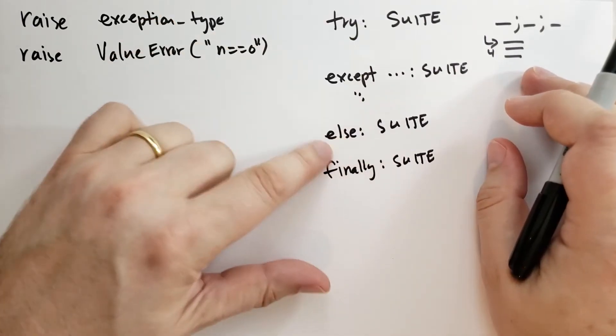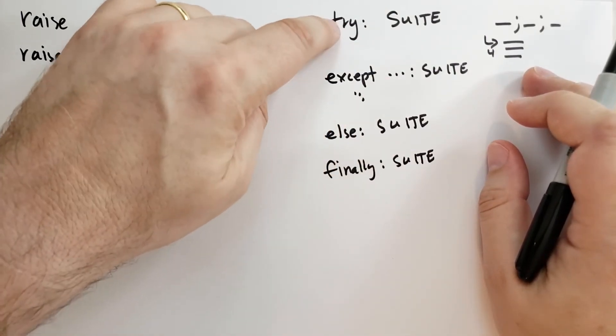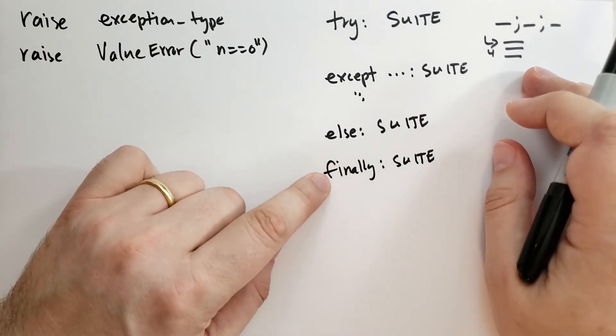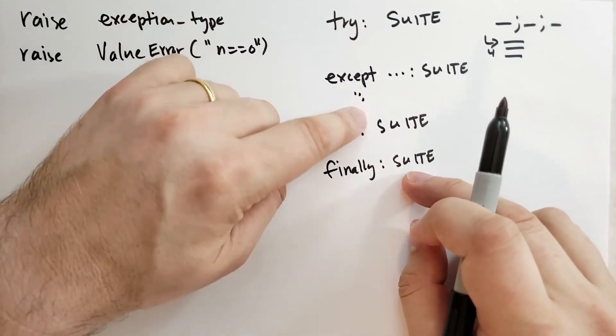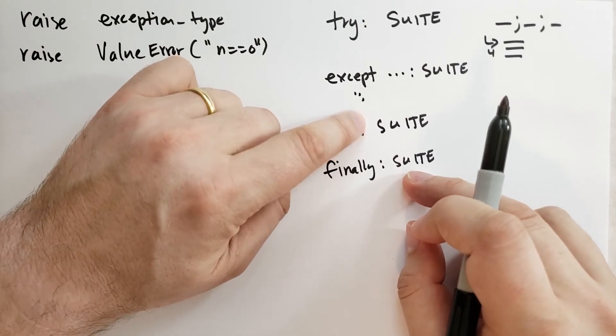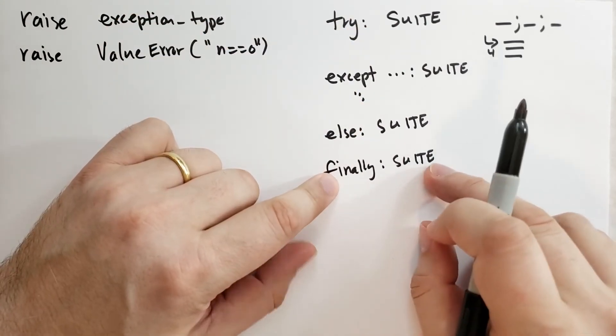No matter what happens, when all the try and except and else blocks are completed, the finally block is always called. So whether you return or raise an exception in this code, or just complete normally, the finally block will be called.